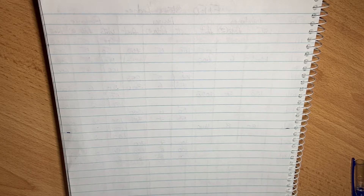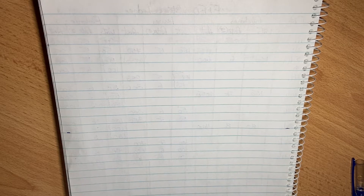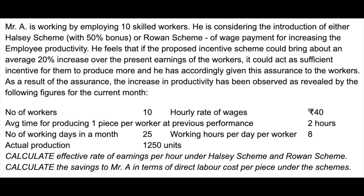We are going to check the Rowan premium plan and Halsey premium plan. The problem is: Mr. A is working by employing 10 skilled workers. He is considering the introduction of the Halsey or Rowan incentive plan. He feels that if the proposed incentive could bring about an average 20% over the present earnings of the workers, it would be sufficient as an incentive for them to produce more.